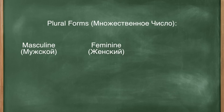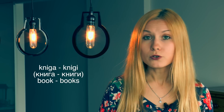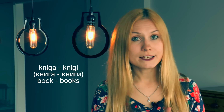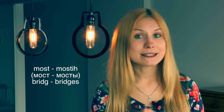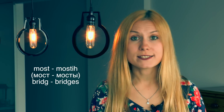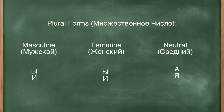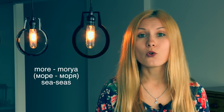In the plural form, masculine and feminine nouns have the same ending: И or И. Книга — a book — becomes Книги, books. Мост — a bridge — becomes Мосты, bridges. And neuter nouns take А or Я: Море — the sea — becomes Моря, the seas.